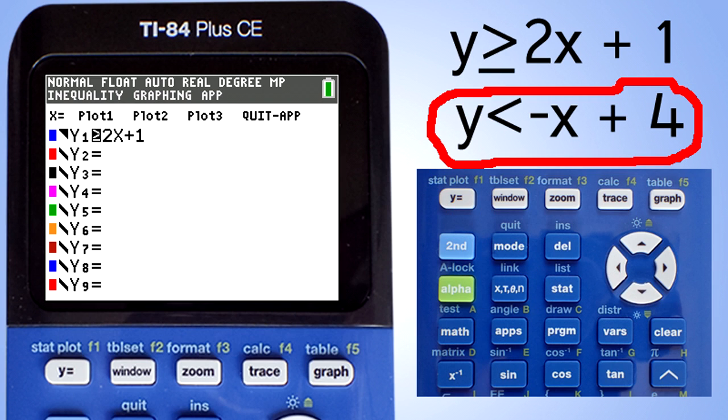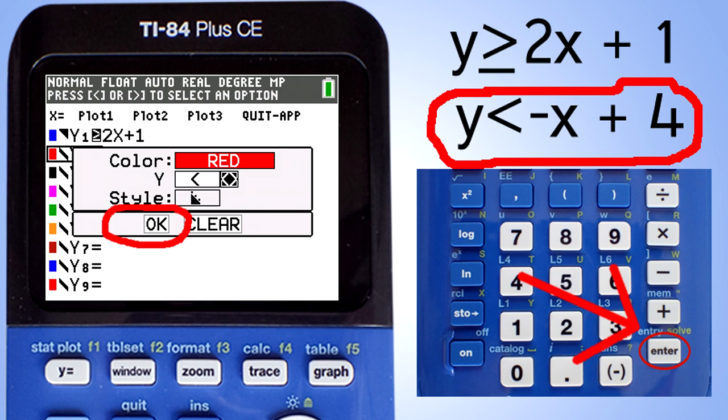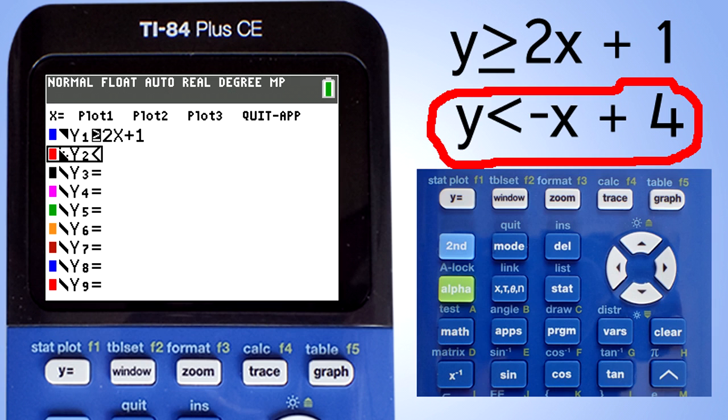Now let's enter the next equation. Press the down arrow key so that we can enter the next equation here at the Y equals spot. Press the left arrow key twice to change the inequality sign to a less than sign. Now go down to the OK and press the enter key.